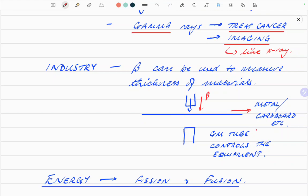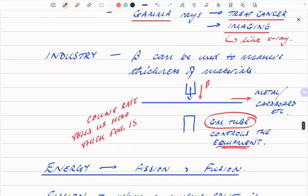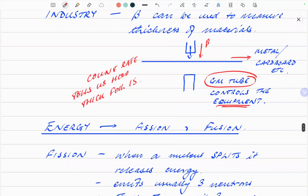The machine, the GM tube, which is what I mentioned earlier, can detect the count rate. The count rate tells us how thick the foil is. And that machine then controls the equipment to either make it thinner or thicker accordingly.